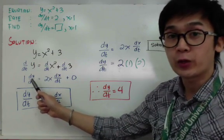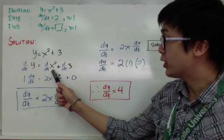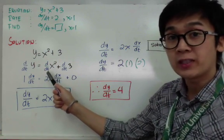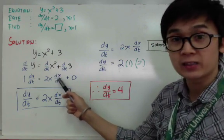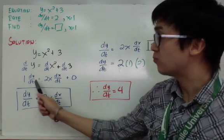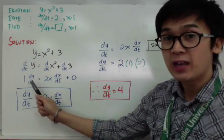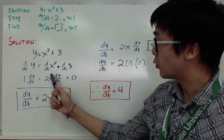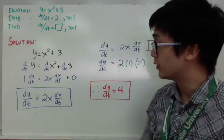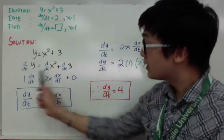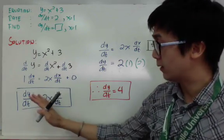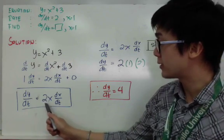For the second term, the derivative of x squared is 2x. Since x and t are different variables, we use implicit differentiation, giving us dx over dt. The derivative of the constant three is zero. After simplifying, the derivative becomes dy over dt equals 2x dx over dt.